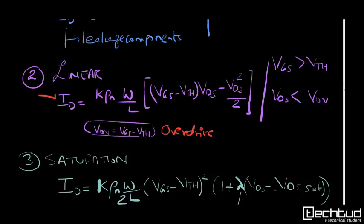The second is linear region. Here ID is K Rho W by L times VGS minus VTH times VDS minus VDS square by 2. You should remember these equations where W by L is the aspect ratio, and Rho and COX, where Rho is mobility of NMOS or PMOS and COX is gate oxide capacitance per unit area.